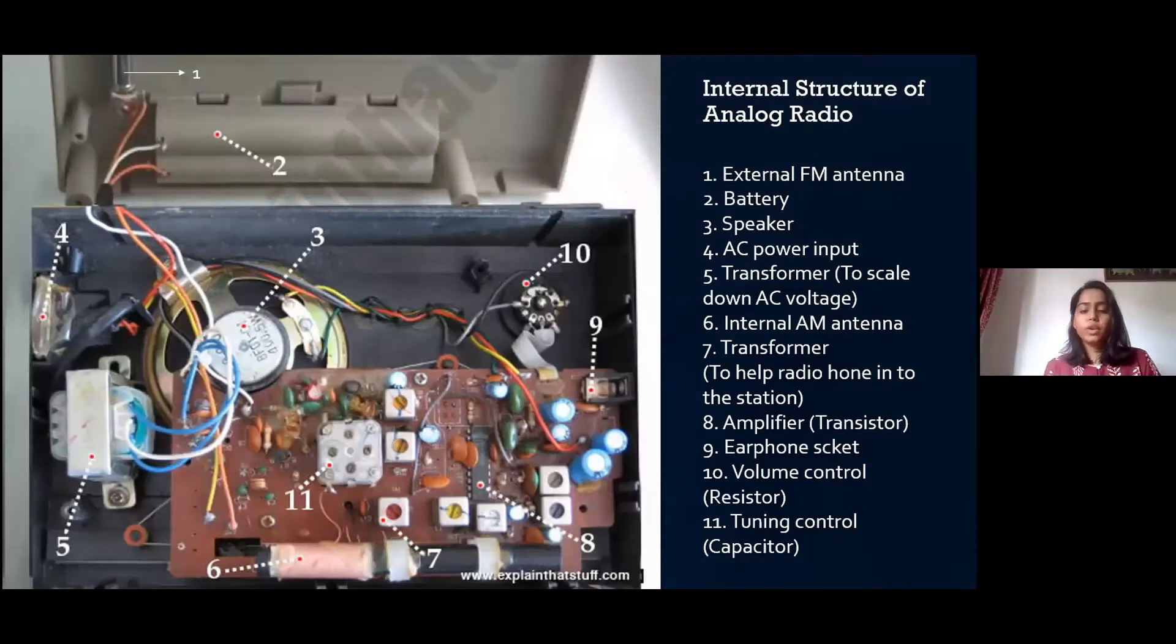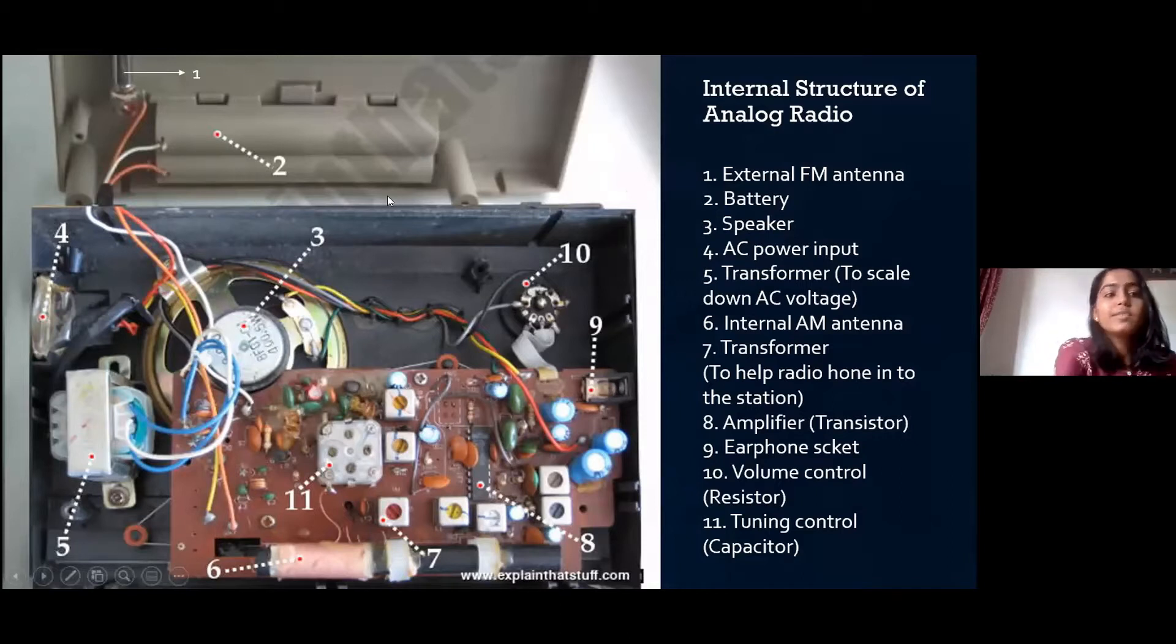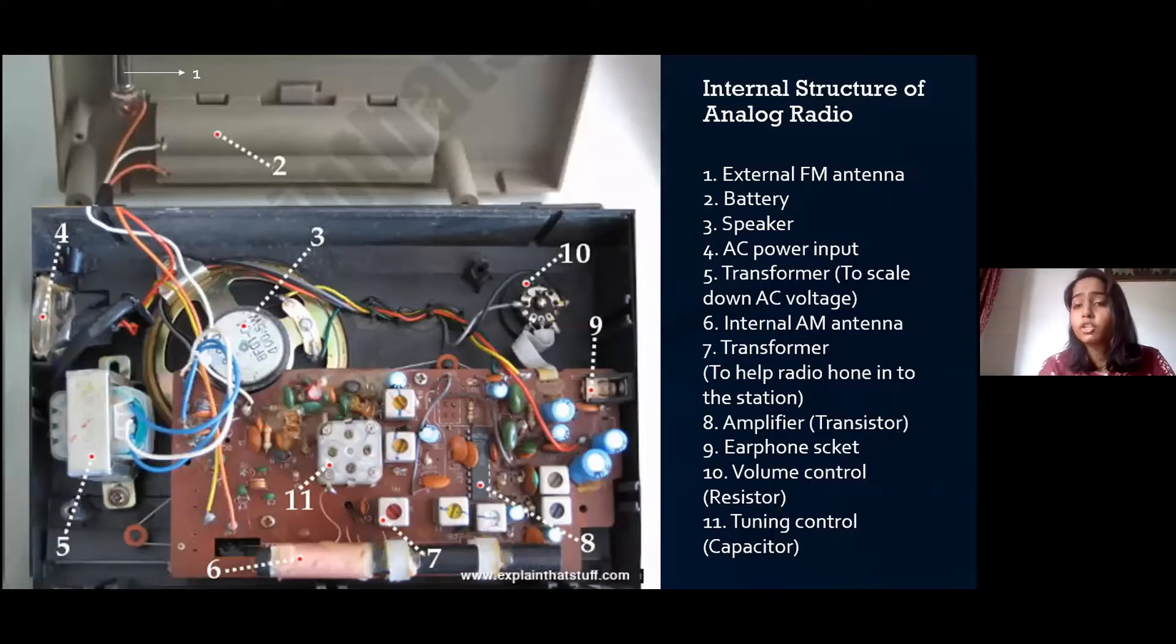Before we go into the nanotube radio I'll just go into the structure of how actually radio was before. As you can see in this picture, you can see the antenna over here, the battery, the speaker, AC power, transformer, amplifier, volume control. These are all the electric components which were needed to transmit the radio waves. We had a huge circuit and the device was of a huge size but we reduced that with the nanotube radio.